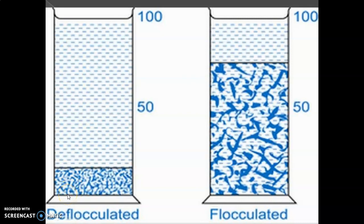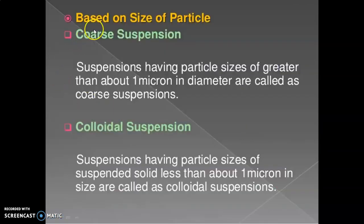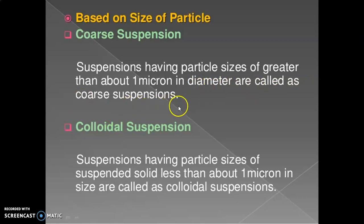These diagrams explain deflocculated and flocculated suspension. Deflocculated suspension looks like this, with floccules formed in the flocculated type. The last class is based on size of particle. Coarse suspension has particle sizes greater than about 1 micron in diameter. Colloidal suspension has particle sizes of suspended solid less than about 1 micron in size and are called colloidal suspensions.